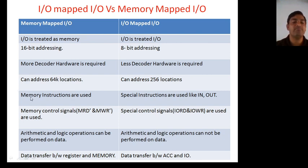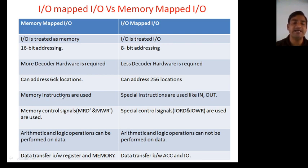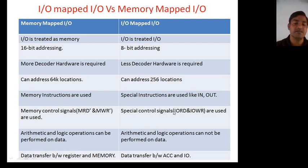For memory mapped I/O, memory instructions are used such as ADM, STA, LDA, LDX, and STX. For I/O mapped I/O, special instructions like IN or OUT are the only ones used. Memory control signals for memory mapped are memory read and memory write, while for I/O mapped they are input-output read and input-output write.